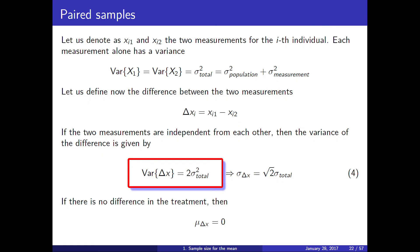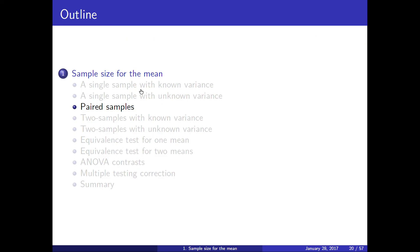For each person i, we have two measurements: before and after treatment. The variance of each is the population variance plus measurement variance — the total variation σ²_total. Our true measurement is the difference between after and before. This transforms two columns into a single one, putting us back in the single-sample situation with either known or unknown variance. Typically you estimate variance from the data.